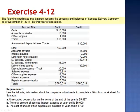Exercise 12. The following unadjusted trial balance contains the accounts and balances of Centega Delivery Company as of December 31, 2011, its first year of operations. We're asked to use the following information about the company's adjustments to complete a 10-column worksheet for Centega.